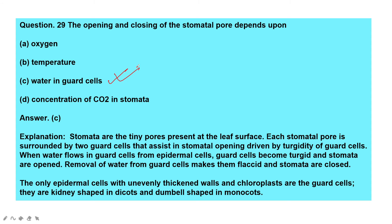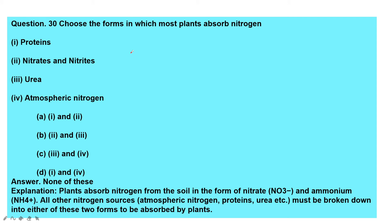Question: The opening and closing of the stomatal pore depends upon — water in the guard cells. Turgidity plays a very important role in stomatal movement. Each stomatal pore is surrounded by two guard cells. When water flows into guard cells from epidermal cells, guard cells become turgid and stomata open. Removal of water makes guard cells flaccid and stomata close. Guard cells are kidney-shaped in dicots and dumbbell-shaped in monocots.